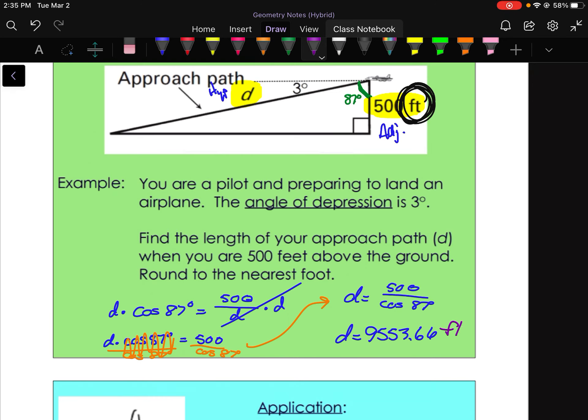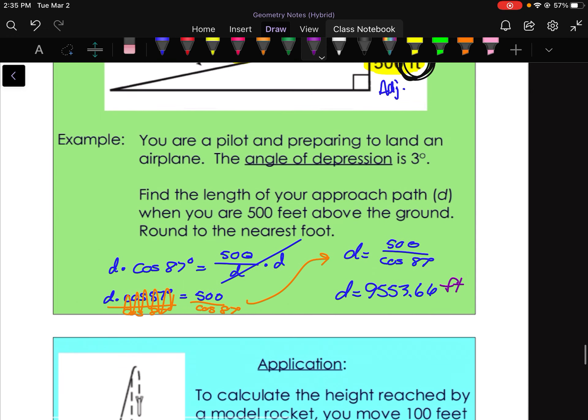There we go. 9,553.66 feet. It does say round to the nearest foot, so I guess I should probably read the directions first here. So D equals 9,554 feet. There we go.